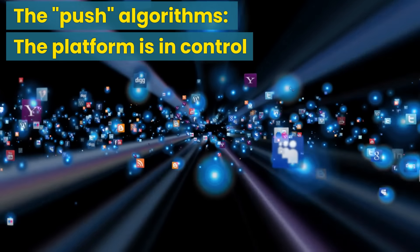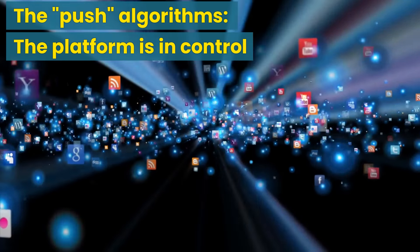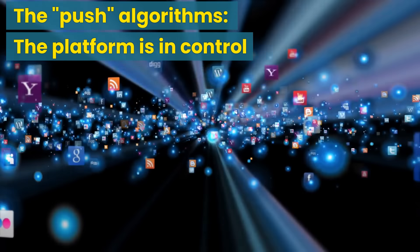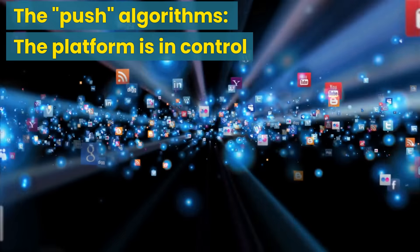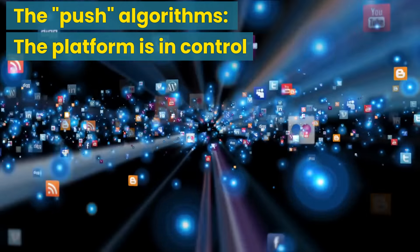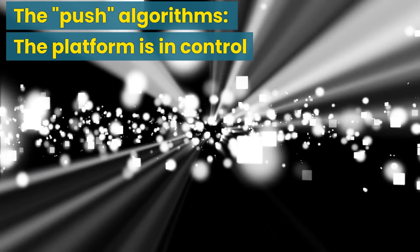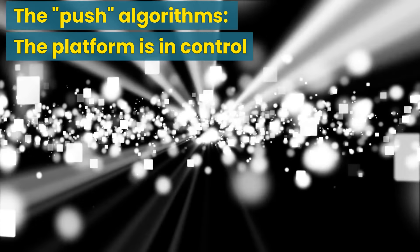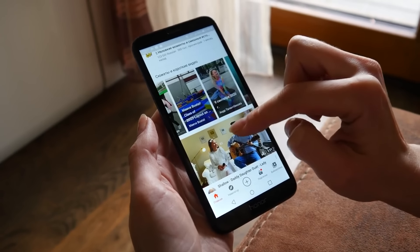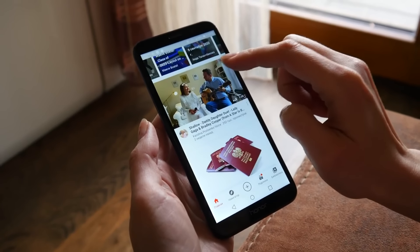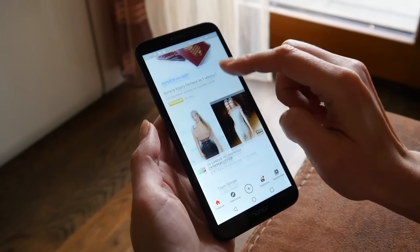Push algorithms — in push algorithms, the platform is in control. Push algorithms anticipate a user's interests and proactively present content to the users. They focus on what they think a user might enjoy, even if the user isn't actively looking for it. Example: YouTube's recommendation engine suggesting videos in your feed based on your viewing history, subscriptions, and trending content.